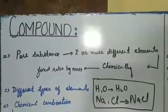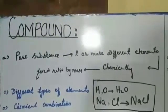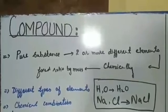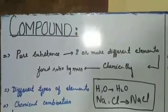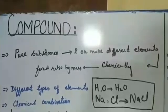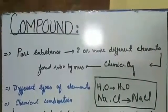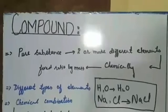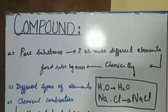Now we will move towards the second type of pure substances, which are called compounds. A compound can be defined as a pure substance of two or more than two different types of elements which are chemically combined together in a fixed ratio by mass. This definition tells us about three important things.